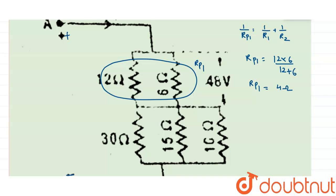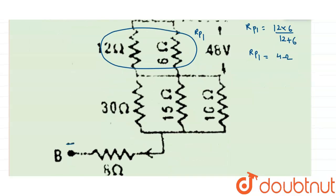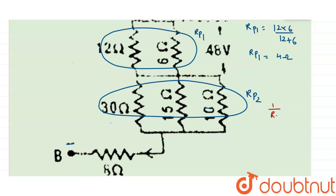There are also three resistors in parallel: 30 ohm, 15 ohm and 10 ohm. The net resistance of this group is Rp2. So 1/Rp2 equals 1/30 + 1/15 + 1/10. After simplifying, 1/Rp2 equals 1/5. That means the net resistance Rp2 is 5 ohm.